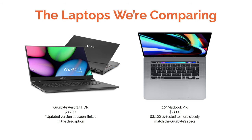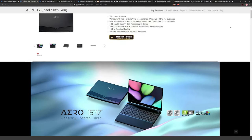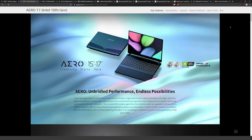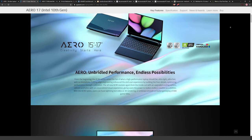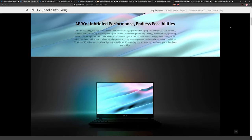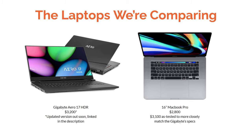In this video we're comparing two powerful laptops for content creation — whether it's design, 3D, or video. First up on the left we have the Gigabyte Aero 17 HDR, which as tested is $3,200. There is a brand new version coming out very soon, currently in pre-order, which is an upgrade from the 9th generation Intel processor to the 10th generation — so that'll be a nice performance boost.